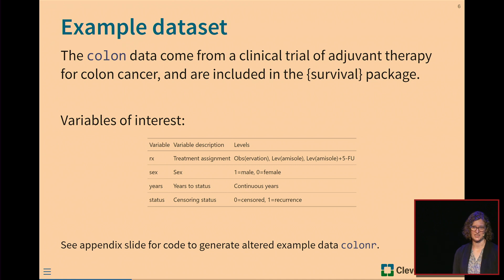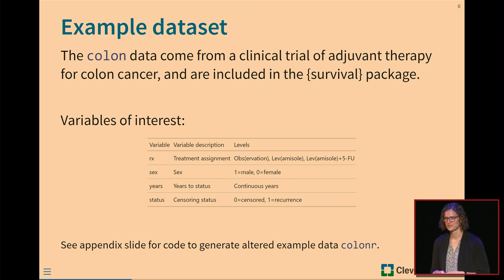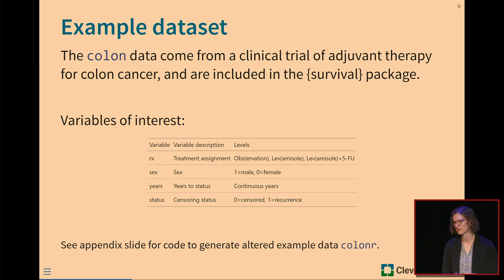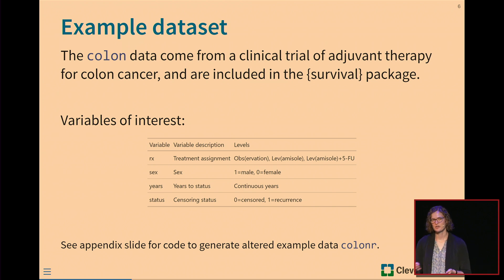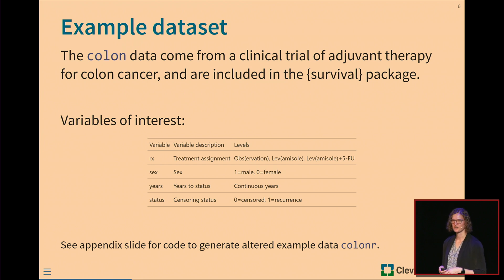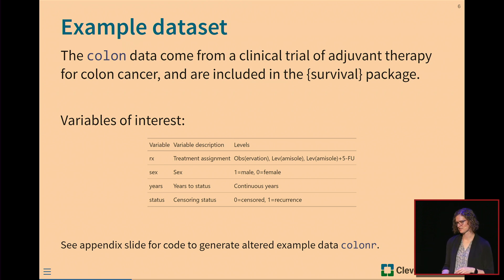I'll be going through examples using the colon dataset included in the survival package, which comes from a clinical trial of adjuvant therapy for colon cancer. I'm focusing on a few variables: treatment assignment (observation/placebo, levamisole, or levamisole plus 5-FU), sex, years to status (the continuous time-to-event endpoint), and a status indicator for whether the patient experienced a disease recurrence or was censored — meaning at end of follow-up they had not yet experienced a recurrence. I altered these data slightly, with a reference slide at the end.